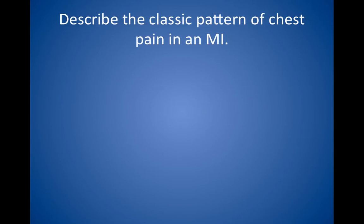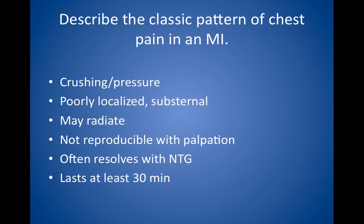Describe the classic pattern of chest pain in a myocardial infarction. The pain is classically described as a crushing or pressure sensation. It is a poorly localized substernal pain that may radiate to the jaw, shoulder, or arm. The pain is usually not reproducible on palpation. In patients with a heart attack, it often does not resolve with nitroglycerin, as it often does in angina. The pain usually lasts at least half an hour.